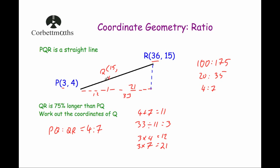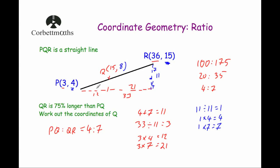Now working vertically to find the y-coordinate of Q: the y-coordinate of R is 15 and of P is 4, so the difference is 11. 11 divided by 11 is 1; 1 times 4 is 4; 1 times 7 is 7. So the vertical rise from P to Q is 4, and from Q to R is 7. The y-coordinate of Q is 4 plus 4, which is 8. Checking: 8 plus 7 is 15. Correct. So the coordinates of Q are (15, 8). If one part of a line is a certain percentage larger than another, you can create a ratio from that.